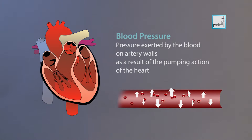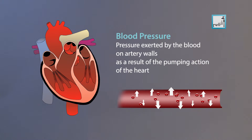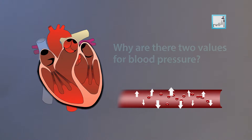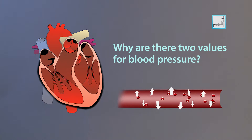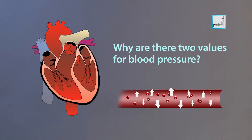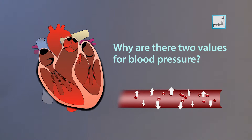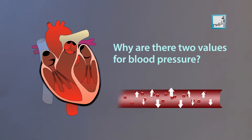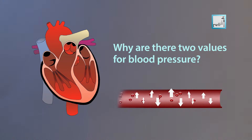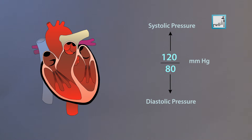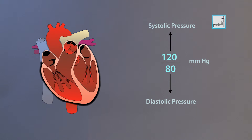The blood pressure is the amount of pressure exerted on your artery walls by the blood flowing into them under the effect of the heart's pumping action. If the heart contracts to push the blood forward, this must be causing a higher pressure on the artery walls than when it relaxes. Exactly — so there are actually two readings for the blood pressure in one person.